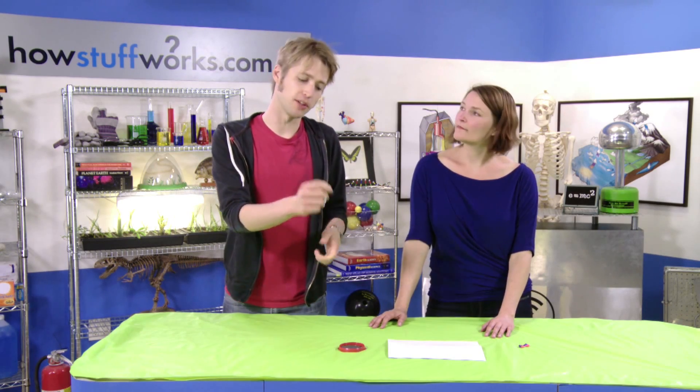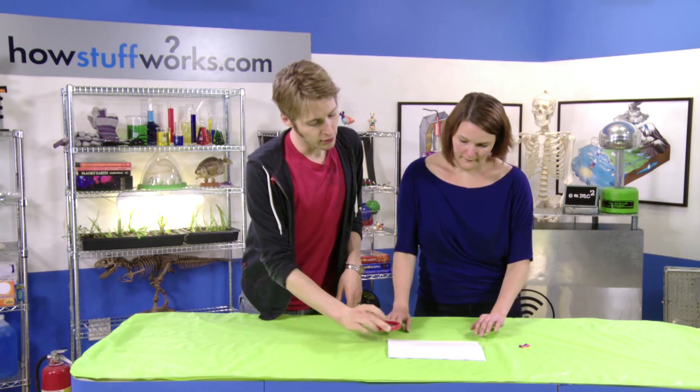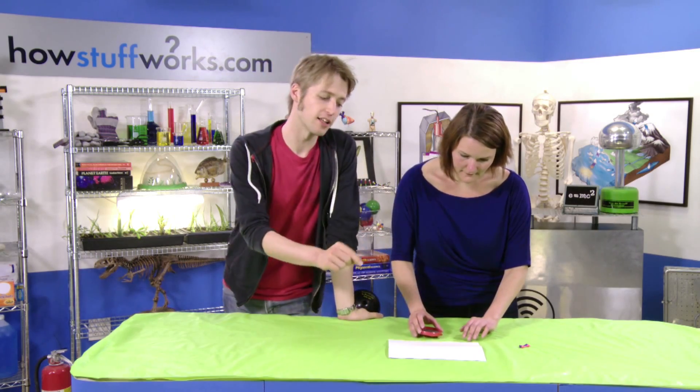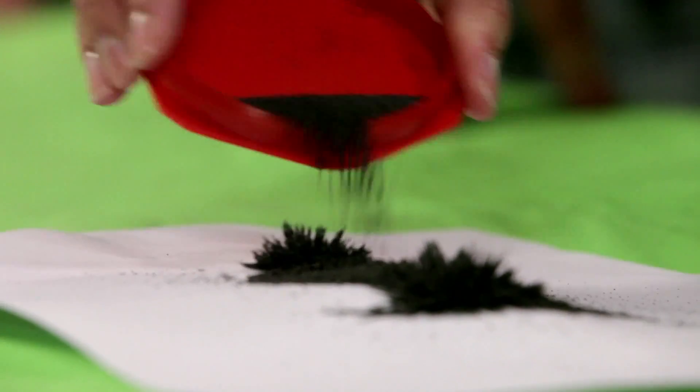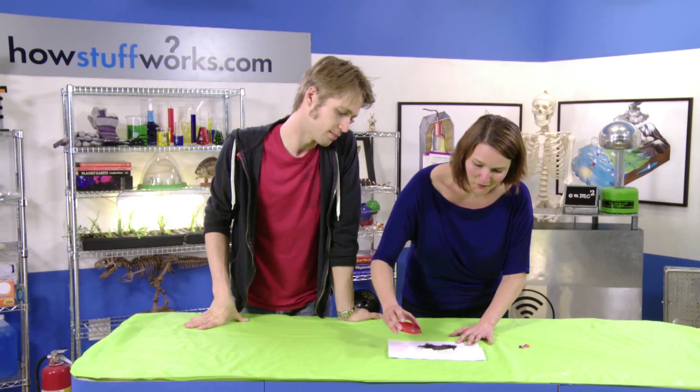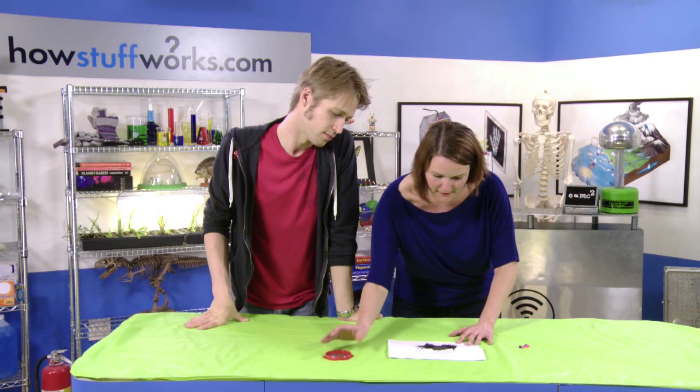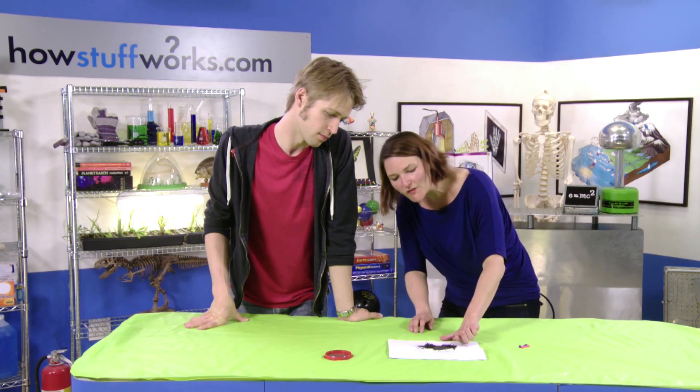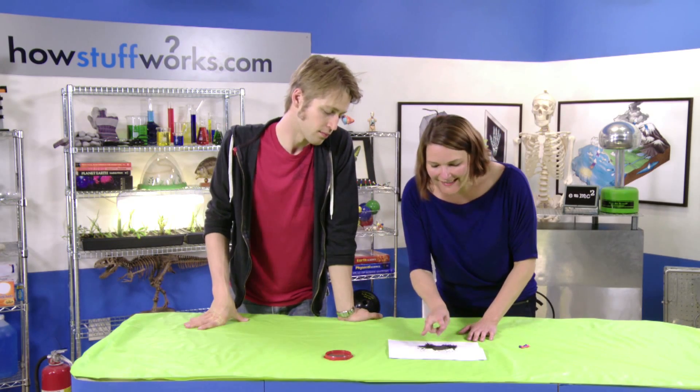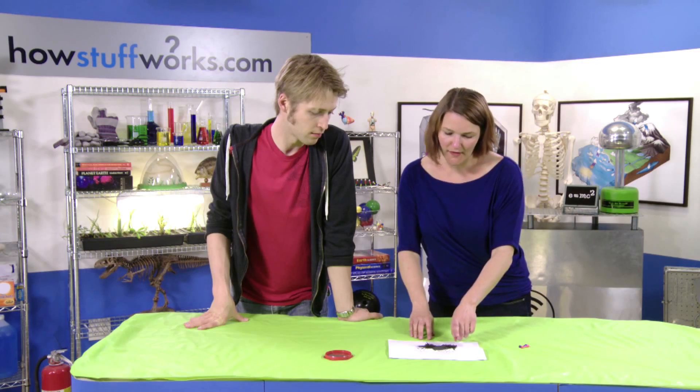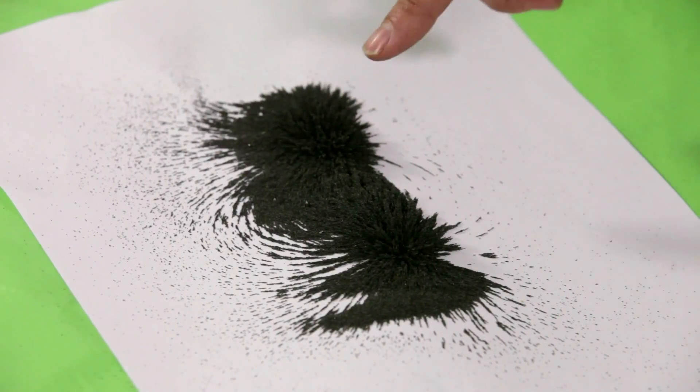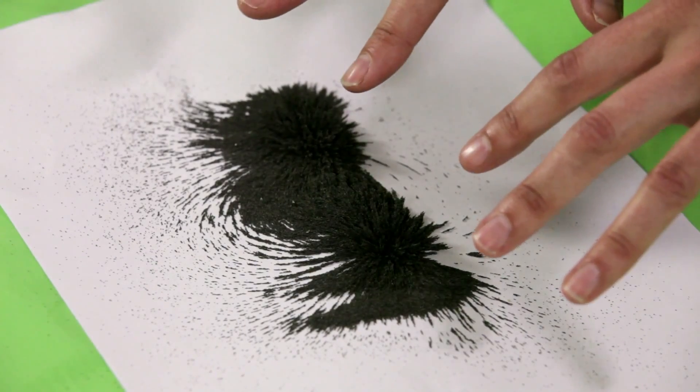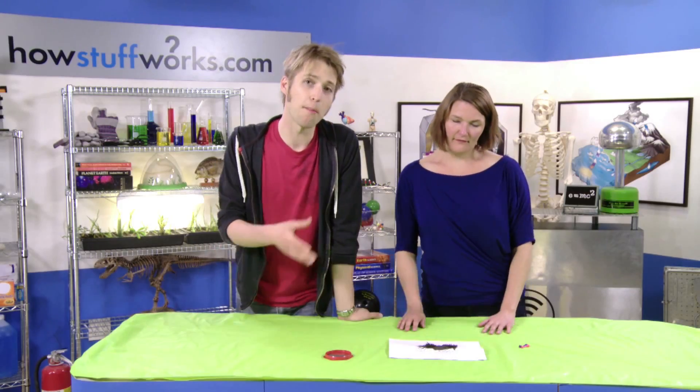So if we pour these iron filings onto this magnet, we're gonna actually see the shape of the magnetic field that's surrounding that magnet. It's really cool because what you see happening here are these little spikes and the iron filings at either side - these represent the north and south poles. And then everything between, this is the magnetic lines that those filings are actually following. So there you have the power of magnetism right there on the table in front of us.